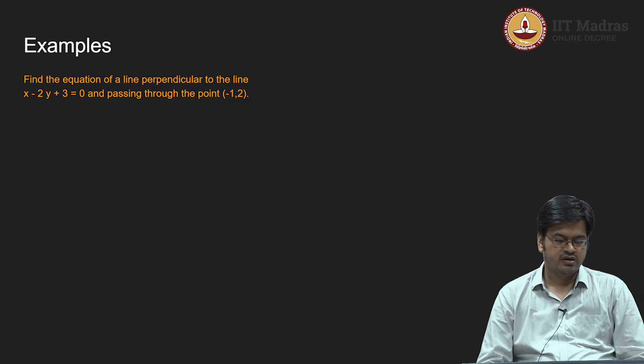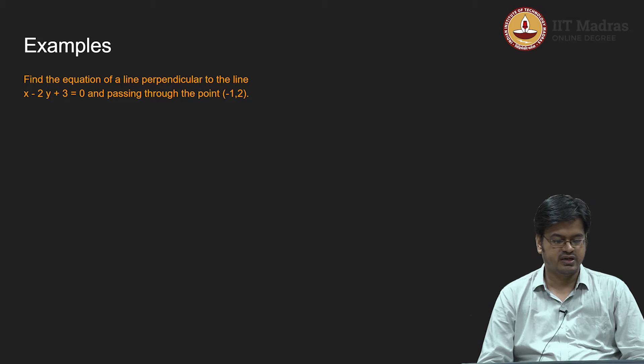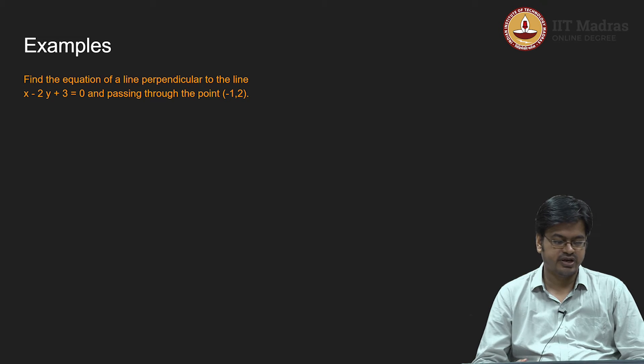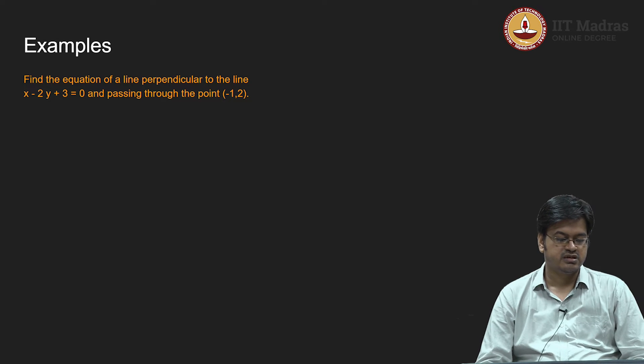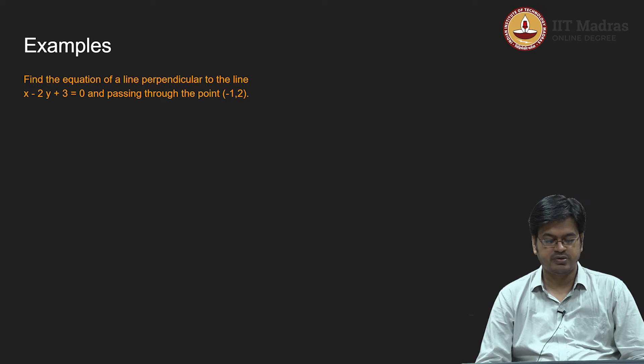Now you have been presented with the equation of a line and a point. The question is: find the equation of a line perpendicular to the line x minus 2y plus 3 equals 0 and passing through the point minus 1 comma 2.